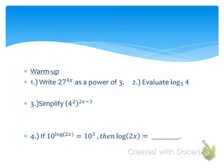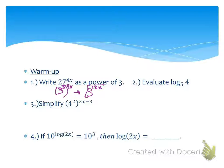Alright, I'm going to go over answers. If I want to rewrite 27 to the 4x to be a power of 3, 27 can be rewritten as 3 to the 3rd power raised to the 4x. We have a power to a power. That rule is when you have a power to a power, you're going to multiply powers. So this is rewritten as 3 to the 12x power. I will never ask you to do this — this will never be a test question — but these are strategies we're going to have to use for today's lesson.